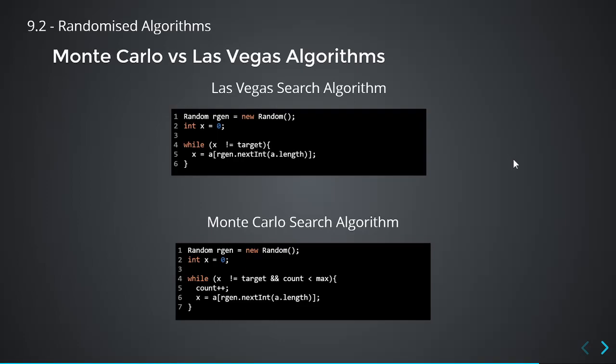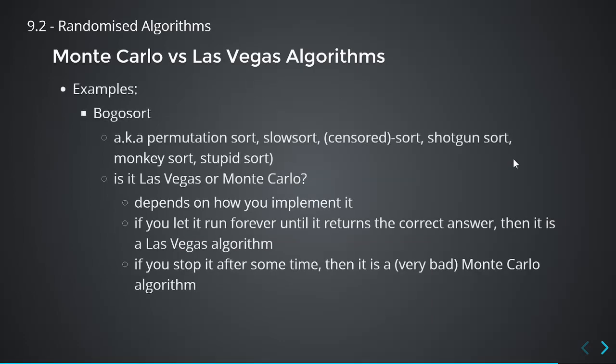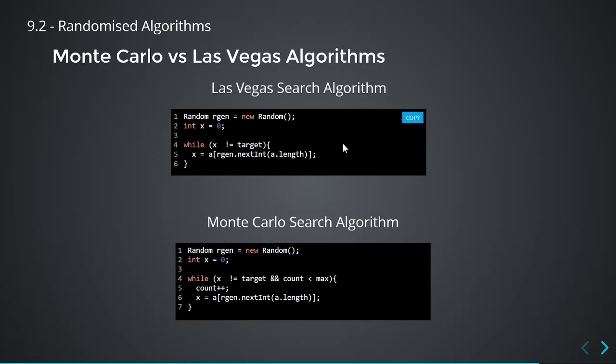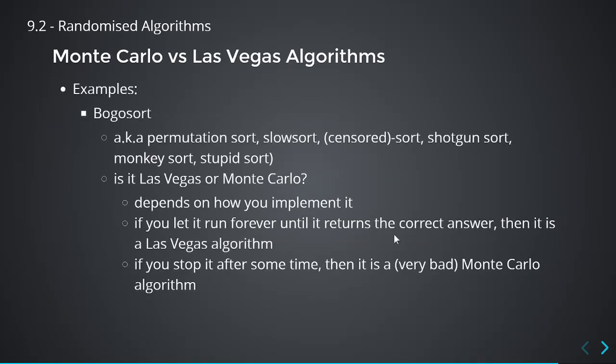Las Vegas and Monte Carlo. Examples: Bogosort, also known as permutation sort or shotgun sort. This is where you have an array, you randomize it, and you hope that it is sorted. It's definitely a randomized/probabilistic algorithm. Is it Las Vegas or Monte Carlo? That depends on how you implement it. If you let it run forever until it returns the sorted answer, that's Las Vegas. If you randomize only a fixed number of times and then stop, that's Monte Carlo — a very, very bad algorithm, but it illustrates the difference.